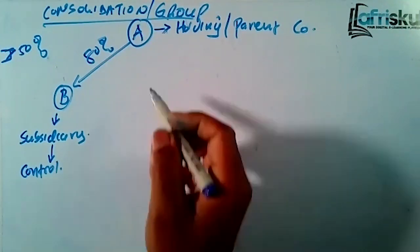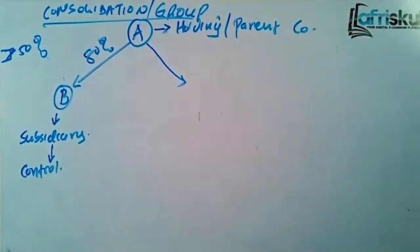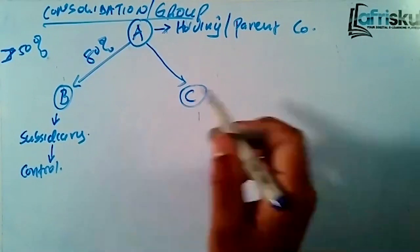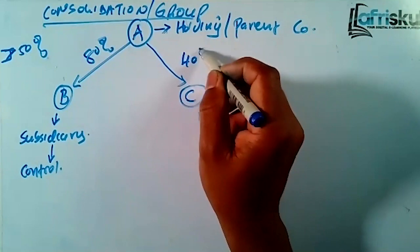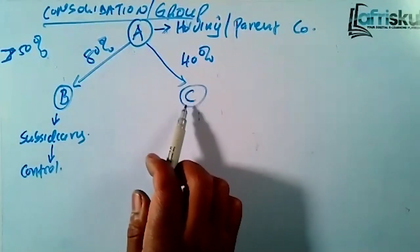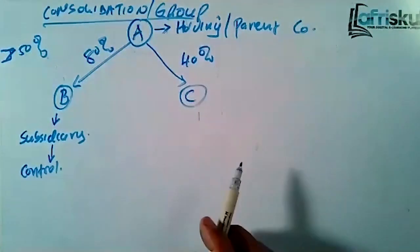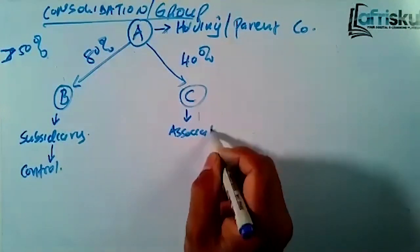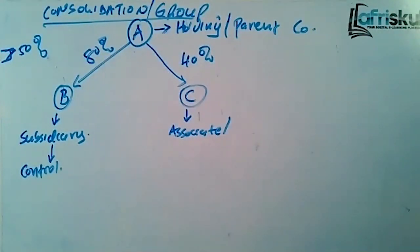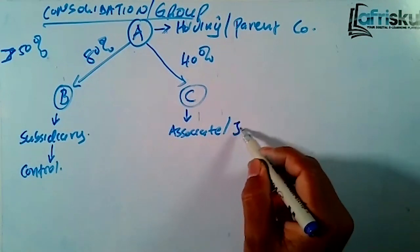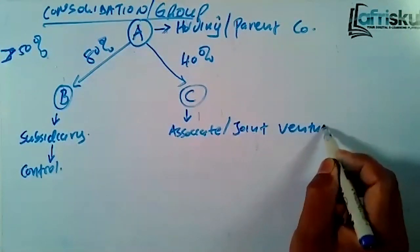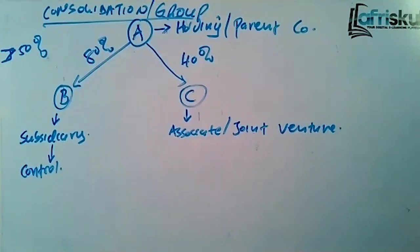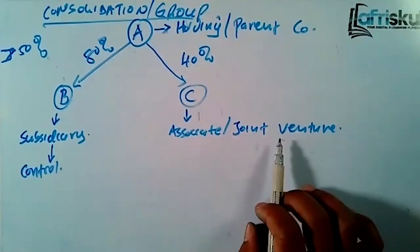Company A can also acquire another company, let's call it Company C, at between 20 percent to 50 percent. For example, let's assume it's 40 percent. In this case, this is what we call an associate. And when it's 50 percent, it is known as a joint venture.